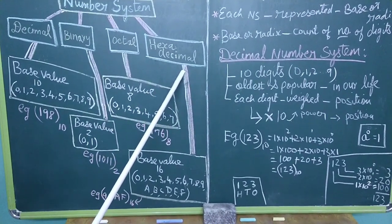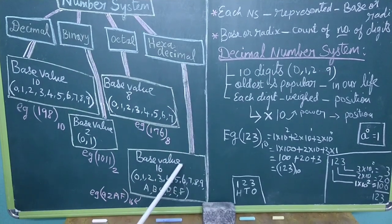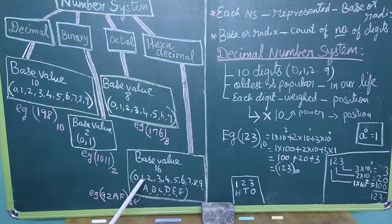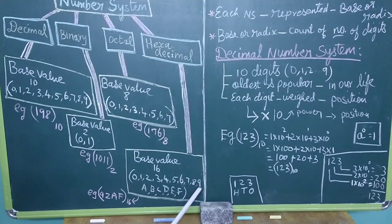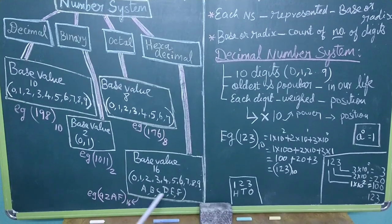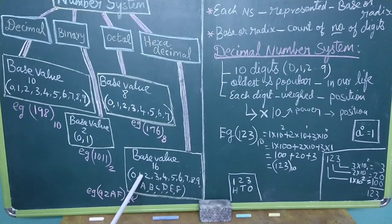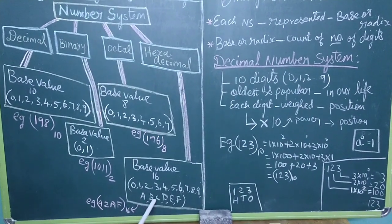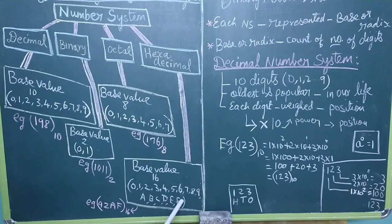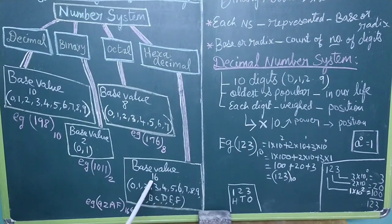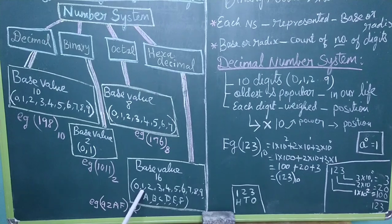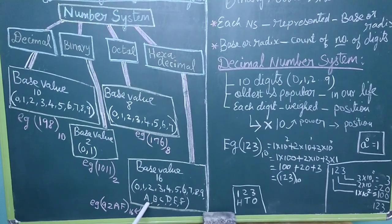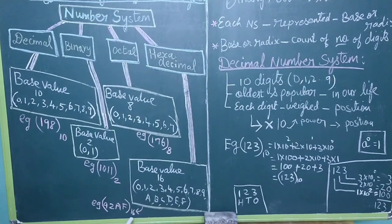Next, hexadecimal number system. Hexa means 16, so its base value is 16. The digits used are 0, 1, 2, 3, 4, 5, 6, 7, 8, 9 — that is 10 digits — and then A, B, C, D, E, F. All together, we get 16 symbols. So this is the hexadecimal number system with base value 16. For example, digits like 9, 2, A, F can form a hexadecimal number.